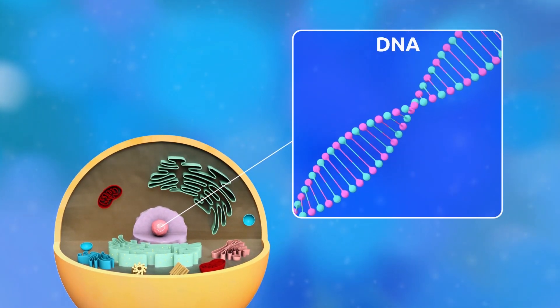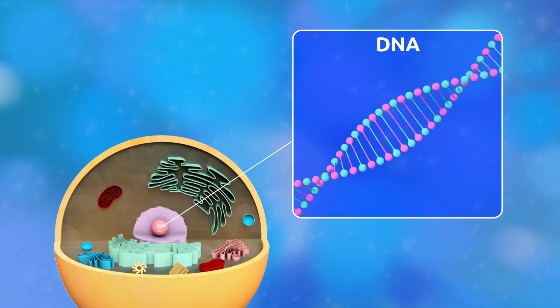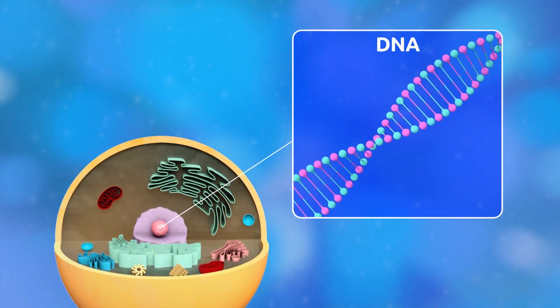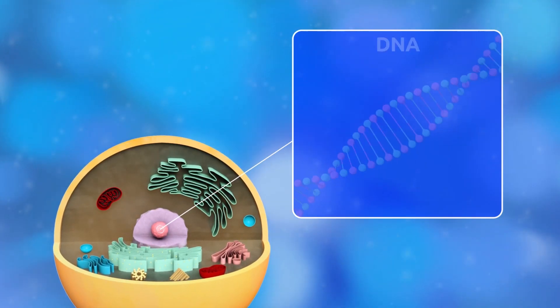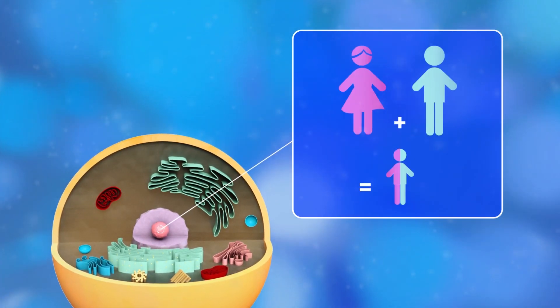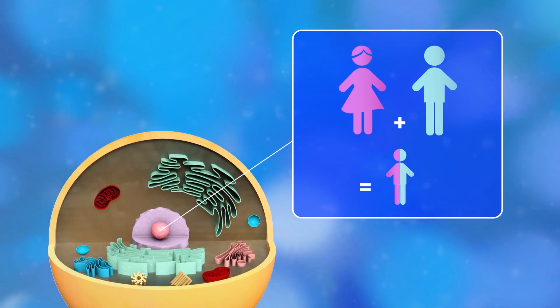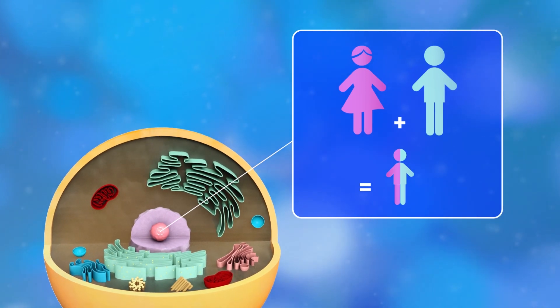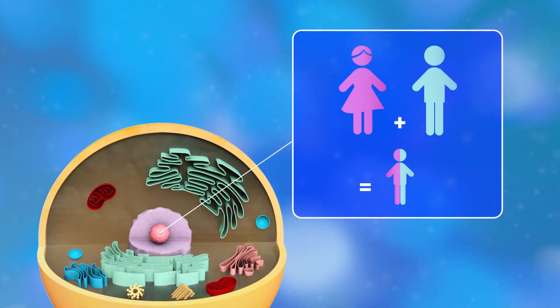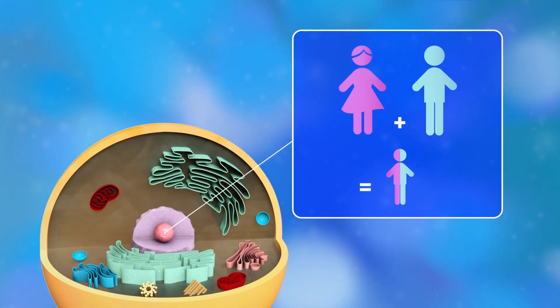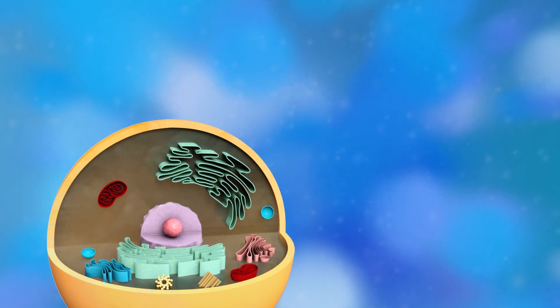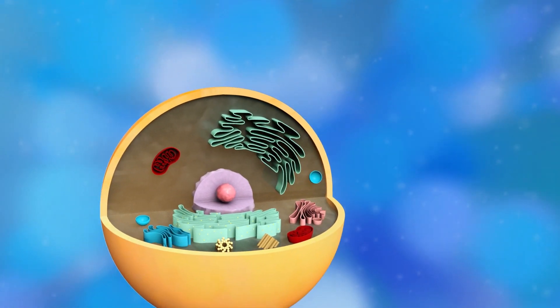DNA is made up of genes which hold genetic information. When animals reproduce, the genetic material will pass on to their young. For this reason, baby animals will have their same characteristics.